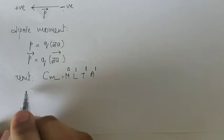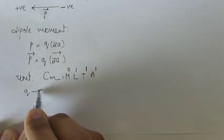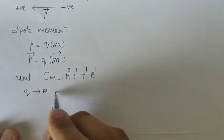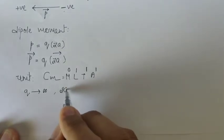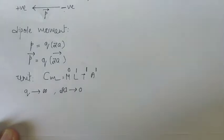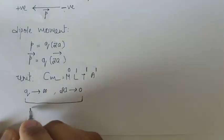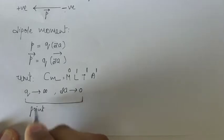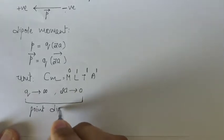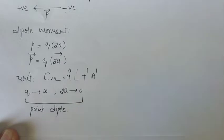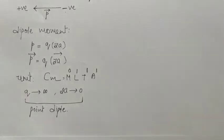In a dipole, if the value of charge is very large — nearly infinite — and the distance between them is very small — nearly equal to zero — this type of dipole is called a point dipole. When the value of charge tends to infinite and distance tends to zero, the dipole is known as a point dipole.